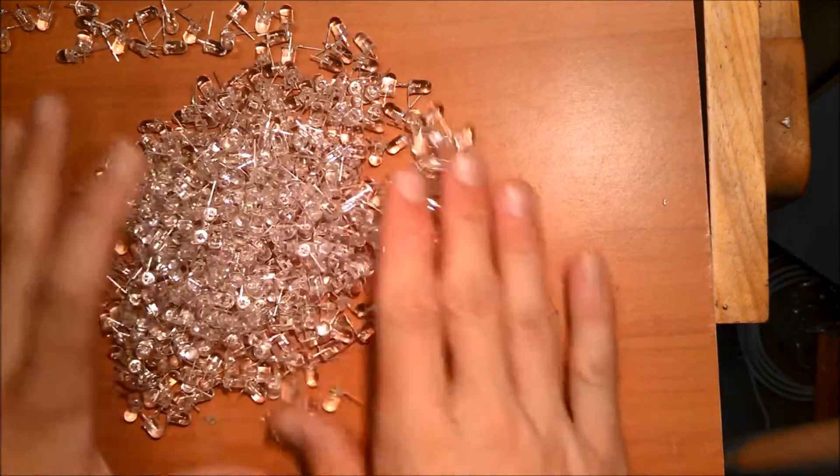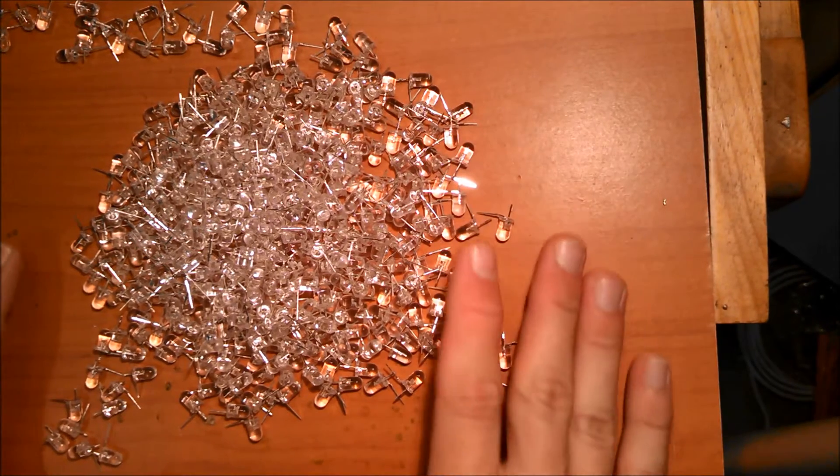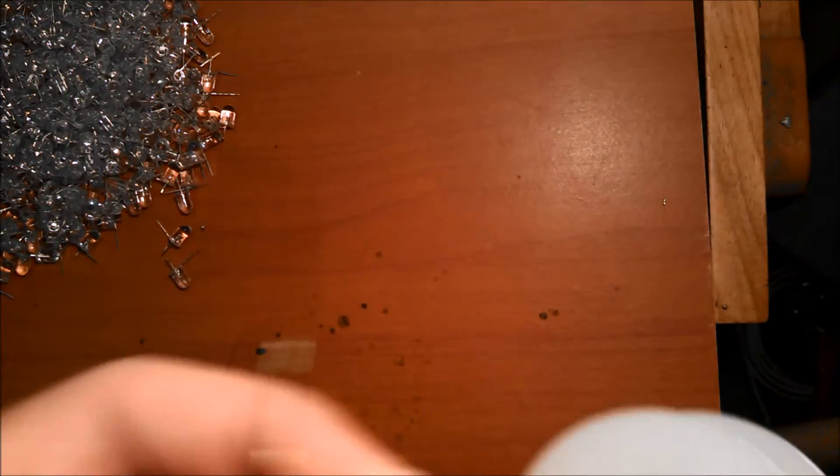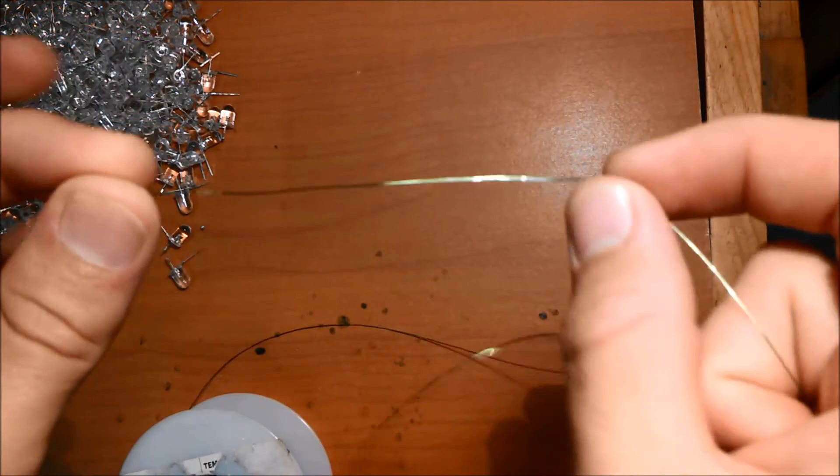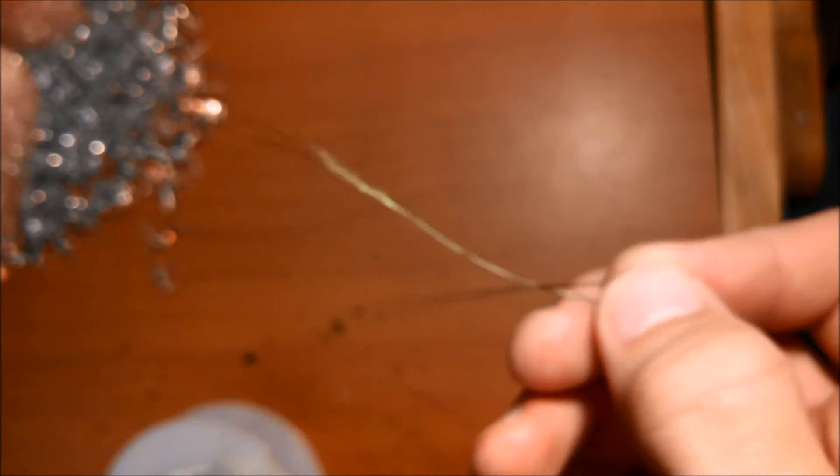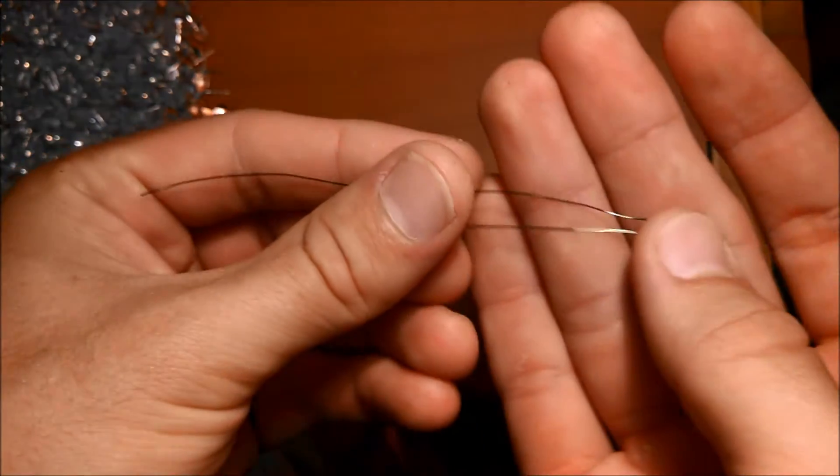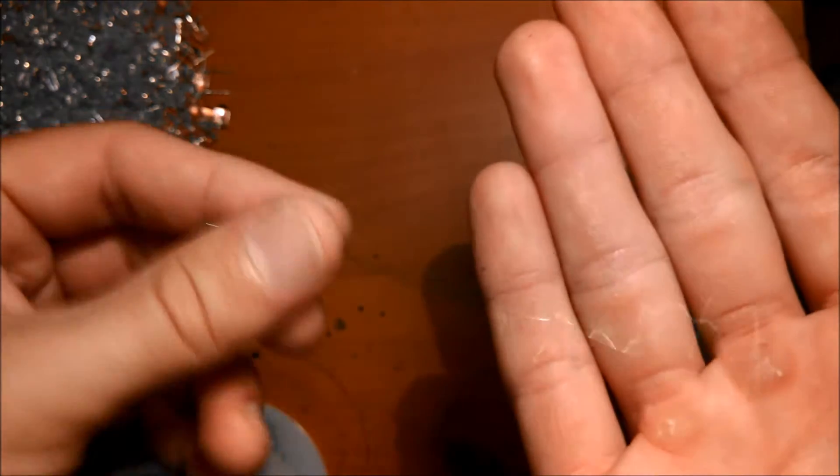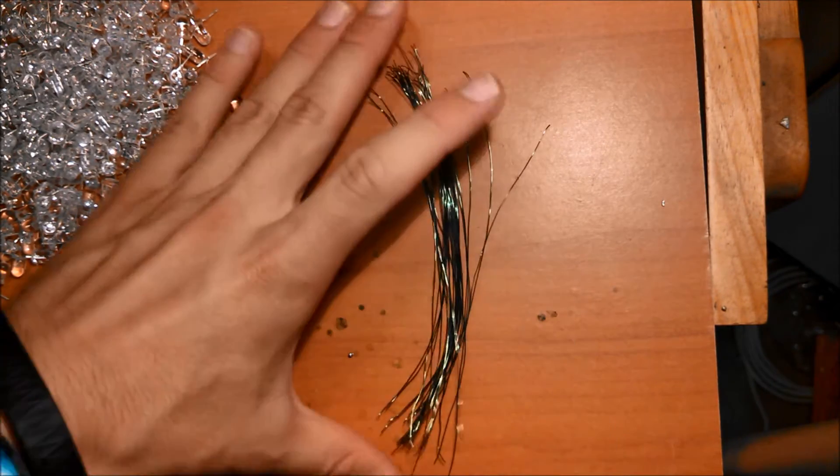So now that you've bent and trimmed all these LEDs it's time to solder them together into rows. First what you'll need to do is take your enameled wire and make either 32 or 40 three-inch sections. Make 32 or 40 of these depending on whether you're trying to make the 256 LED or 320 LED design. Right now I'm working on the 256 LED design so I've made around 32 of these three-inch sections.